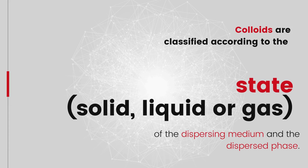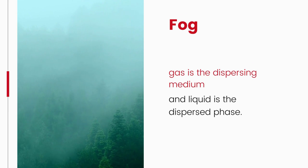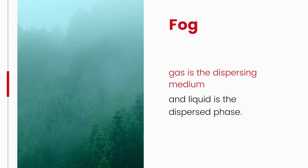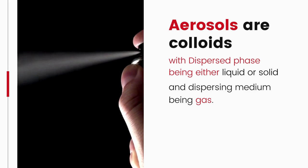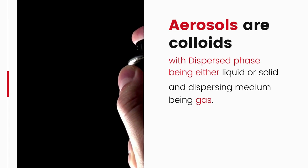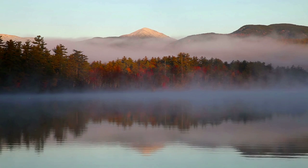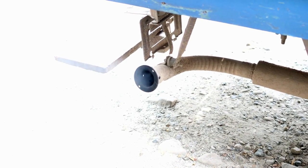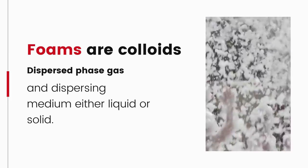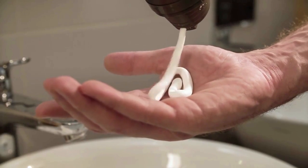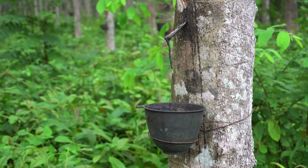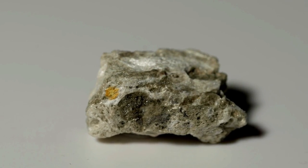Colloids are classified according to the state — solid, liquid, or gas — of the dispersing medium and the dispersed phase. For example, fog has gas as the dispersing medium and liquid as the dispersed phase. Aerosols are colloids with the dispersed phase being either liquid or solid and the dispersing medium being gas — examples include clouds, mist, automobile exhaust, and smoke. Foams are colloids with dispersed phase gas and dispersing medium either liquid or solid — examples include shaving cream, non-vulcanized rubber, sponge, and pumice stone.